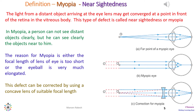As shown in the first figure, the far point, which in a normal healthy eye is at infinity, is shorter than infinity. In the second figure, rays coming from an infinite distance form the image not on the retina but in the region of the vitreous humor. So a myopic person cannot see distant objects clearly.